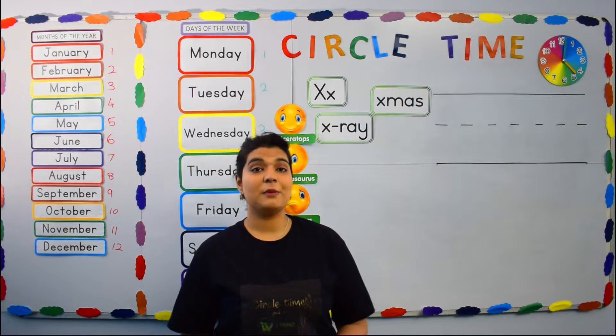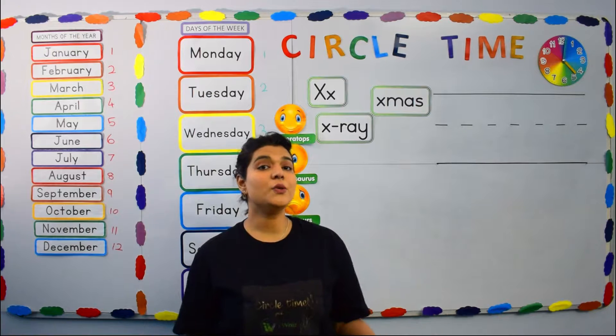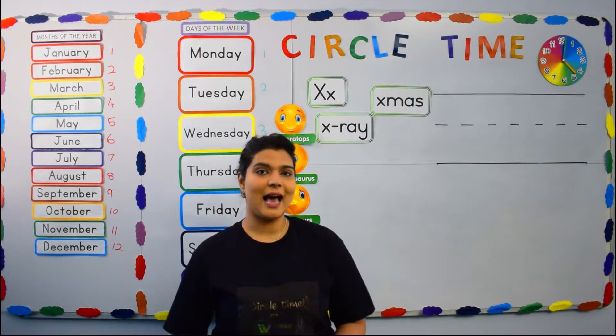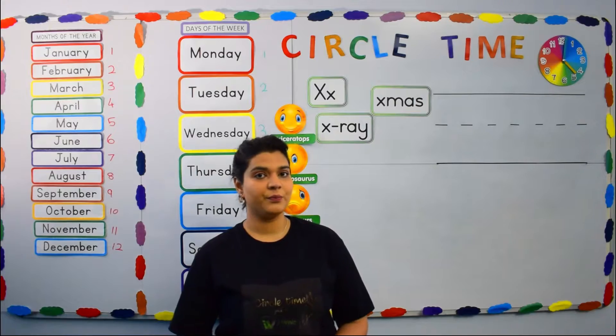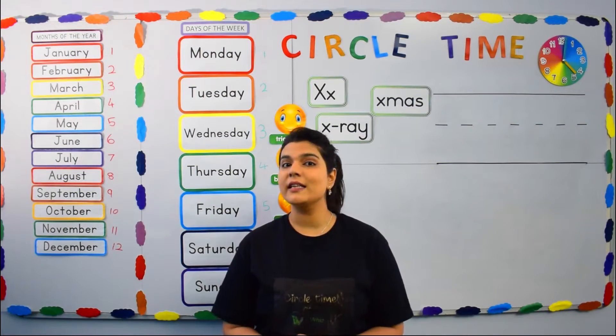Now, recently we've been learning a lot about letters of the alphabet. There are 26 letters of the alphabet. Do you remember what was the last letter that we have done?